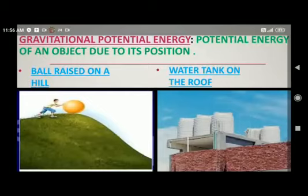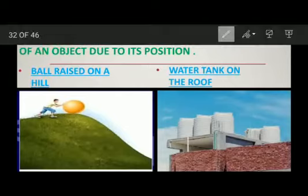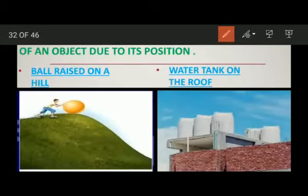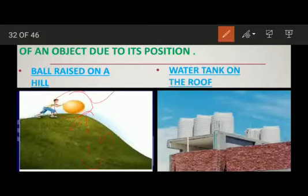Now let us study gravitational potential energy in detail. Gravitational potential energy is the potential energy of an object due to its position. Examples include a ball raised on a hill — whenever we take an object to a certain height above the ground, it possesses gravitational potential energy — and a water tank on the roof, which is at some height from the ground and thus also possesses gravitational potential energy.